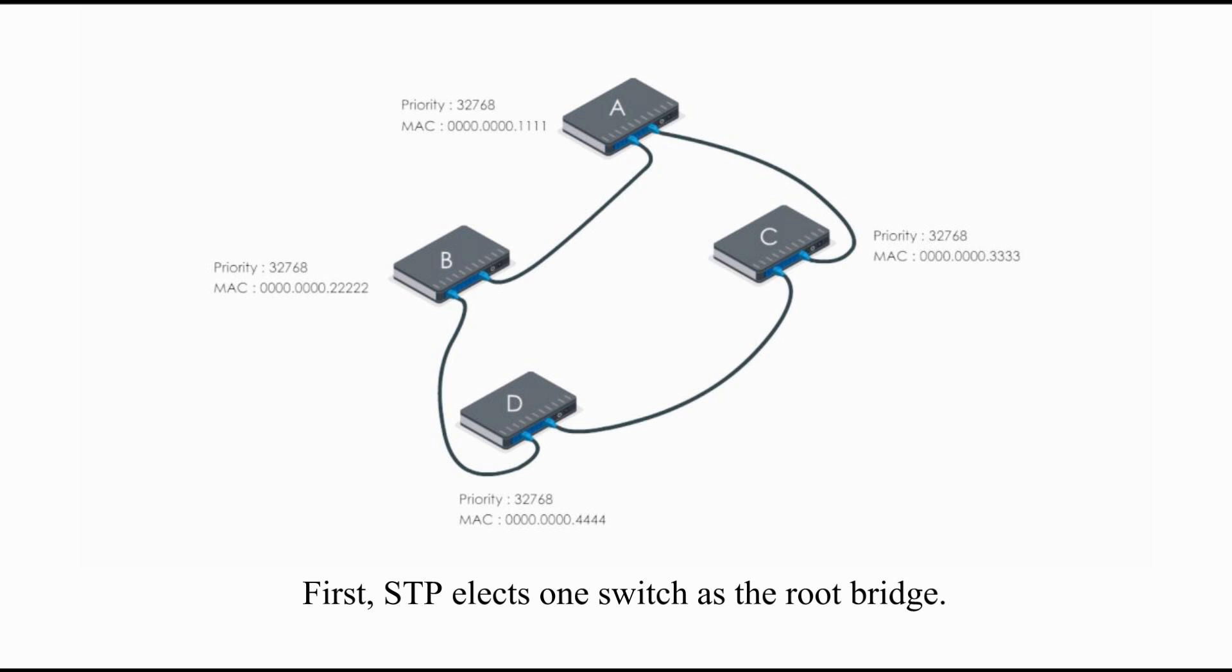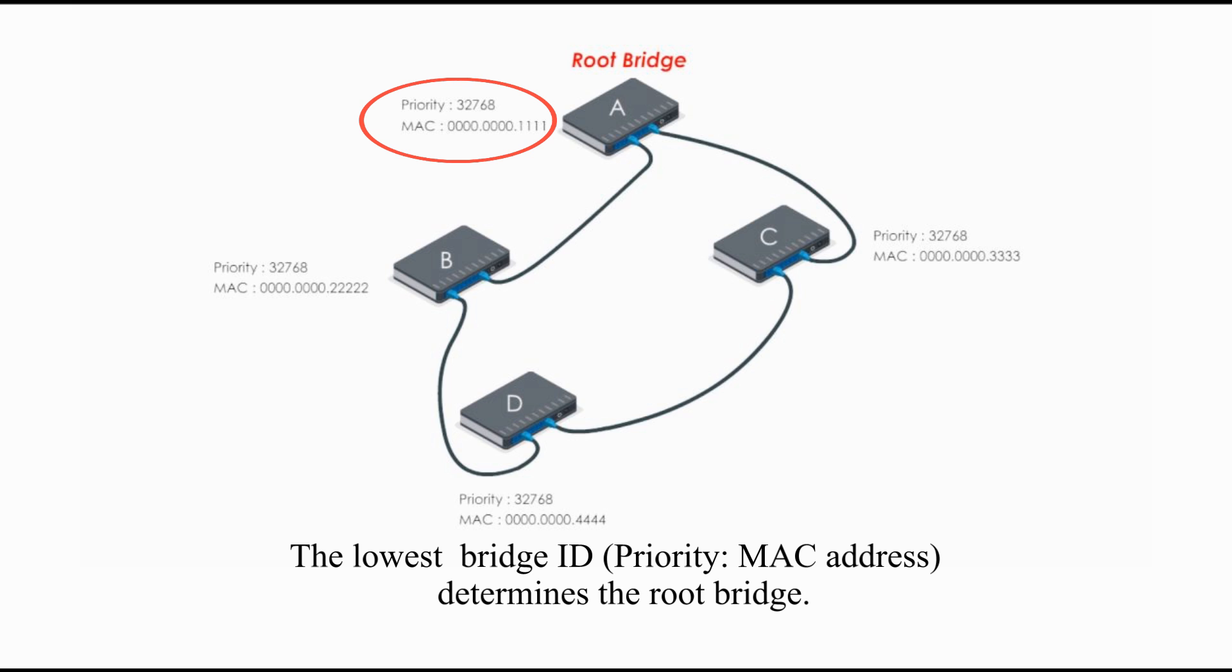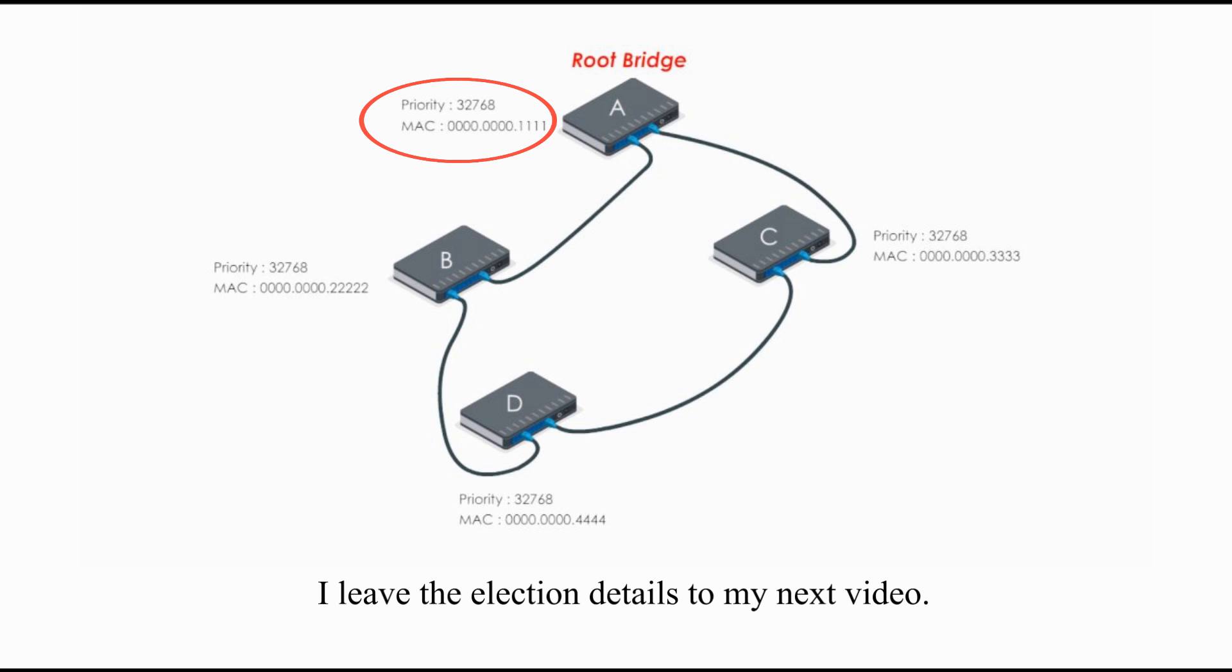First, STP elects one switch as the root bridge. The lowest bridge ID determines the root bridge. I leave the election details to my next video. I try to simplify the process so that we can see the whole picture in this video. Here, switch A is elected as the root bridge.